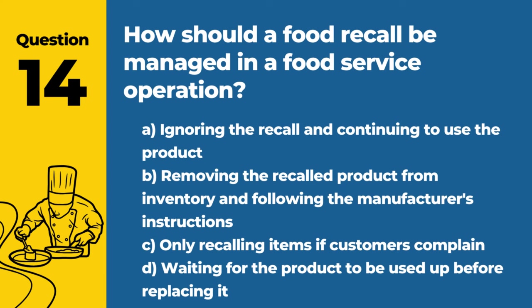Question 14. How should a food recall be managed in a food service operation? Answer: B. Removing the recalled product from inventory and following the manufacturer's instructions. This ensures the safety of customers by eliminating potentially harmful products.